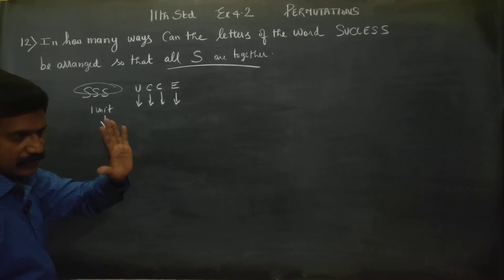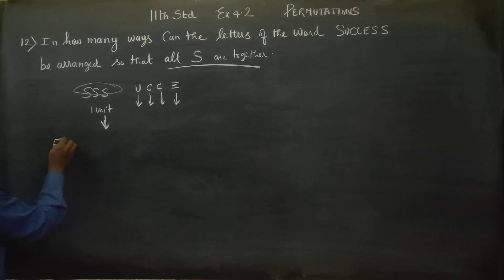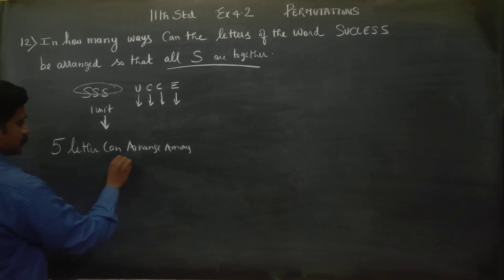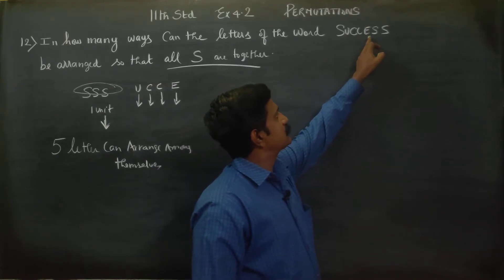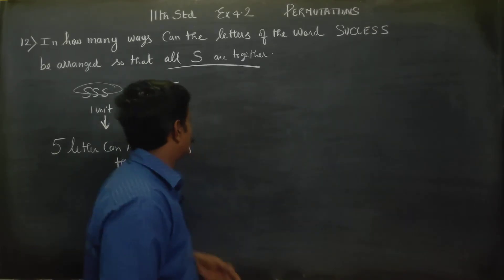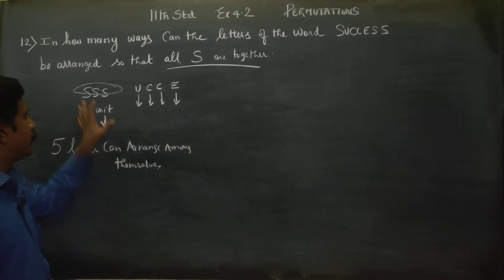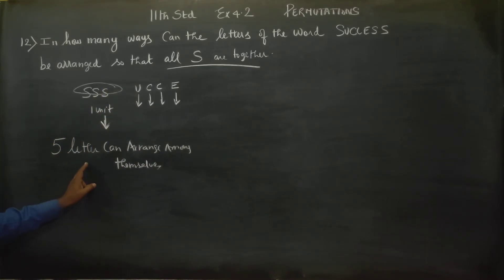We have 5 letters total that can arrange among themselves. The actual word SUCCESS has 7 letters, but with SSS as a single unit we get: SSS as 1 unit plus 4 individual letters (U, C, C, E), making 5 total letters to arrange.